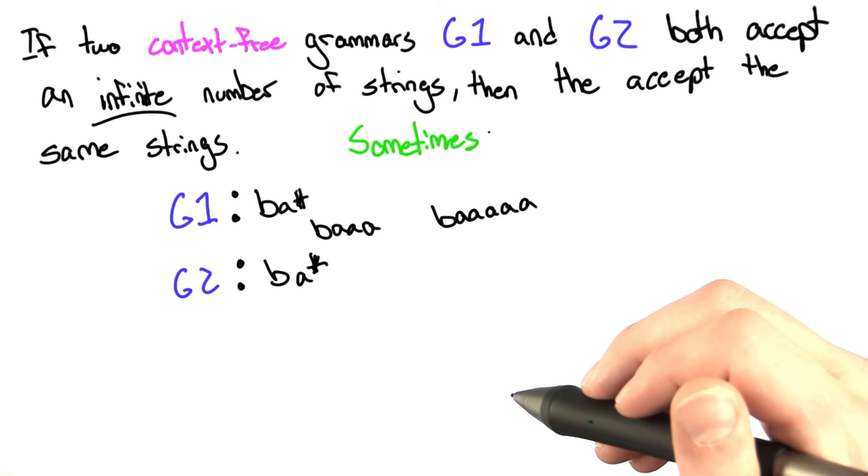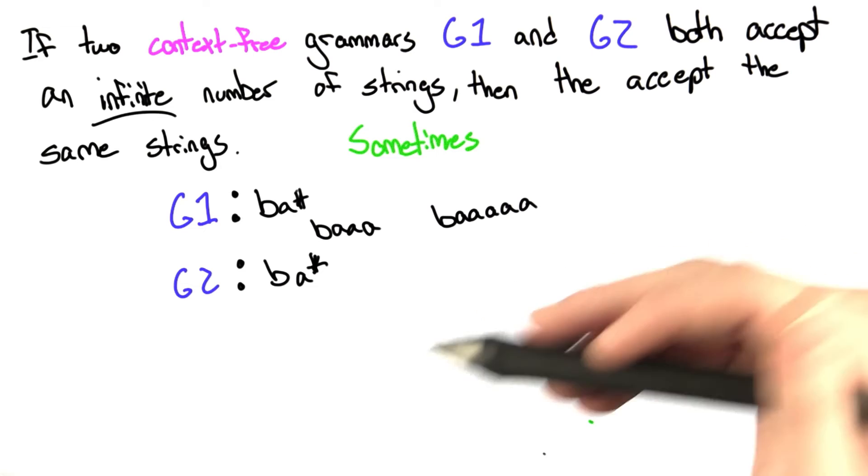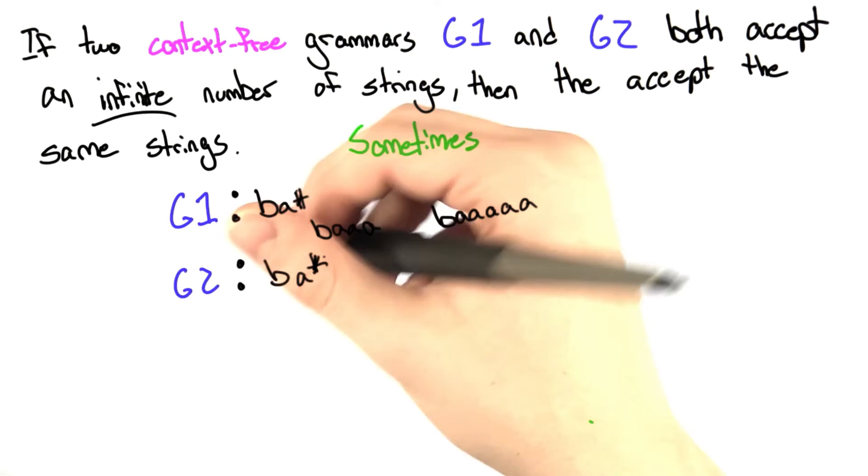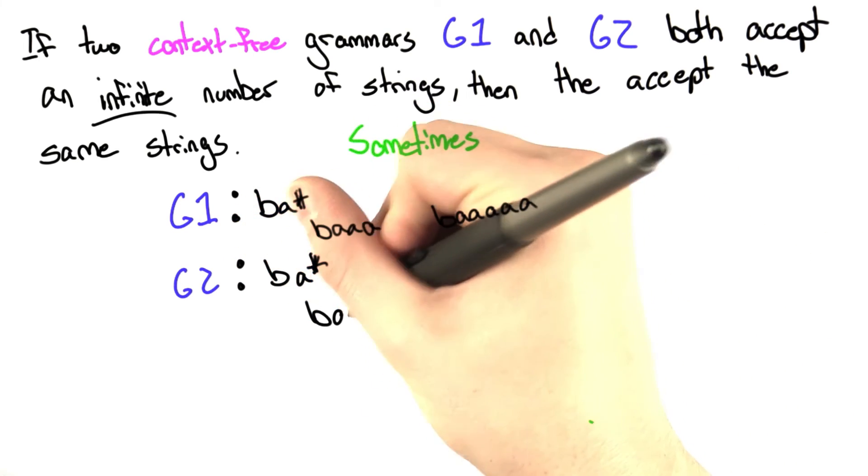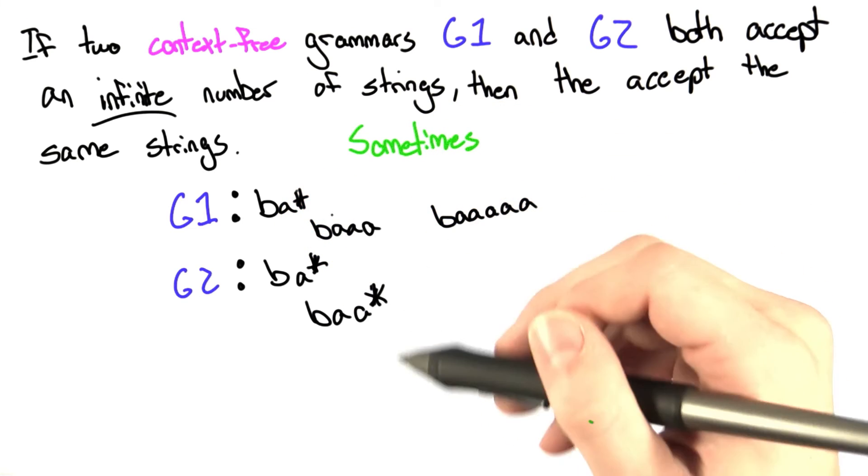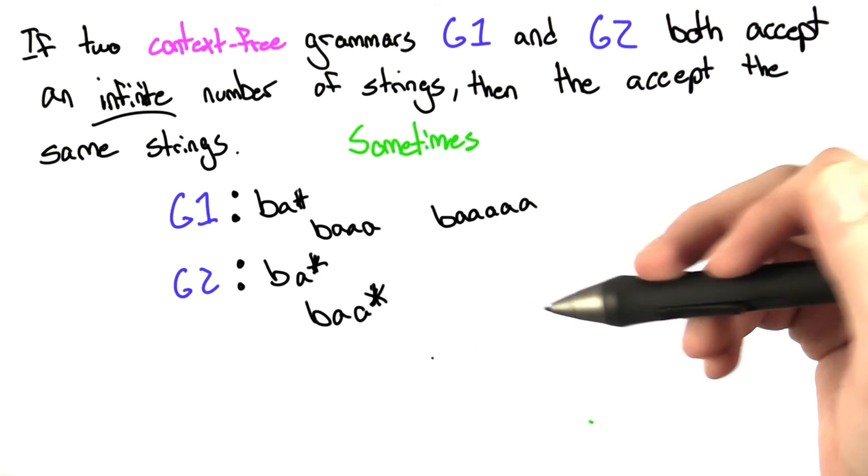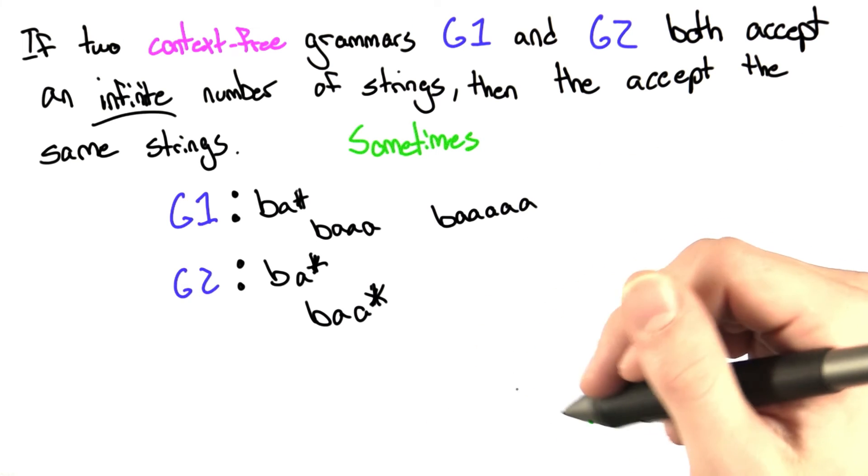You could also come up with examples where G1 and G2 are different, but they accept the same exact strings, so you could do B, A, A star. And you'll also note I used a regular expression for my grammar, but all regular languages are context-free, so this is perfectly acceptable.